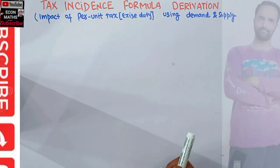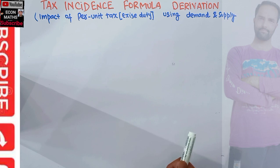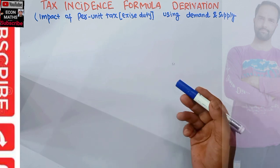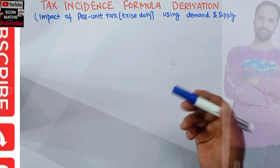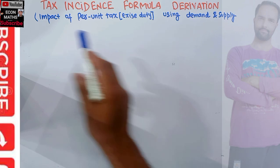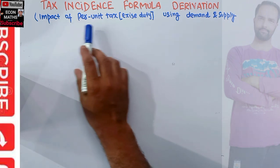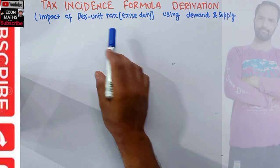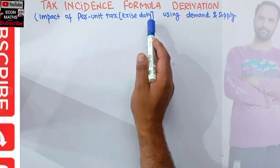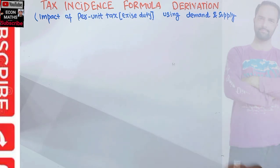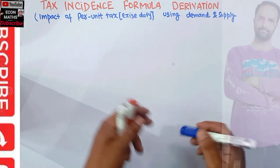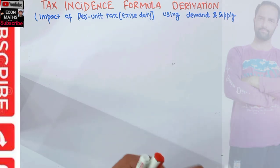In this video we will learn how to derive the tax incidence formula using supply and demand, and using the price elasticity of demand and price elasticity of supply. Specifically, we will see the impact of a per unit tax — that is the excise duty — on the supply function using demand and supply.